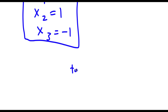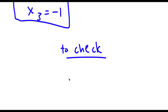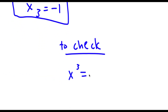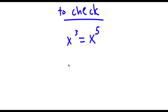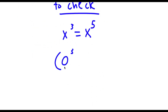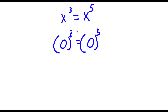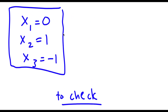Now to check — my original equation was x to the power of 3 is equal to x to the power of 5. Let's first check 0. If x equals 0, I have 0 to the power of 3 is equal to 0 to the power of 5. 0 to the power of 3 is 0 and 0 to the power of 5 is 0. So 0 works.